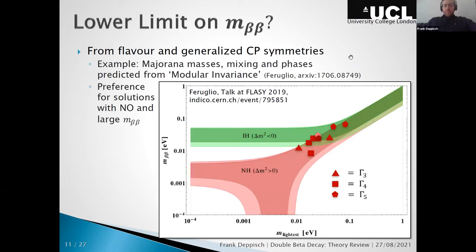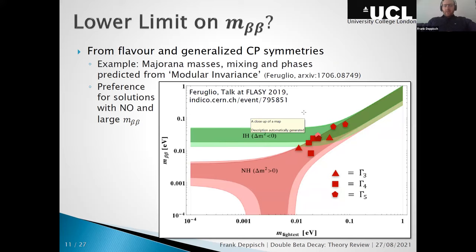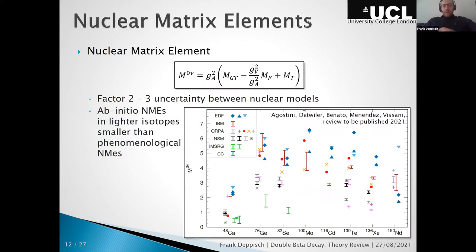Theoretically, one can also invoke enhanced symmetries — flavor symmetries or generalized CP symmetries. For example, modular invariance proposed by Feruglio: in such models, m_ββ has a prediction lying at the upper edge of the parameter space, with many values possibly already excluded by cosmological surveys. These models predict values that do not go into the funnel region. However, this is just one example among many flavor theory models making different predictions.